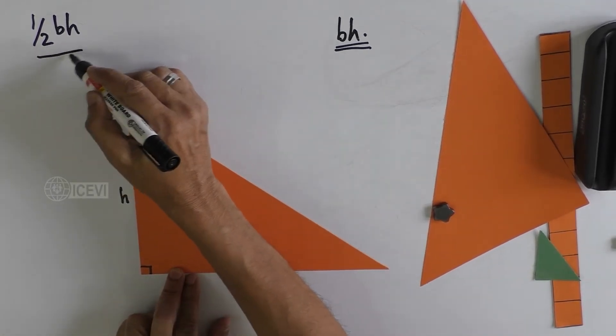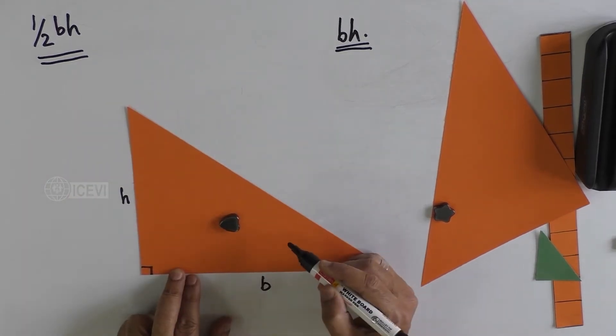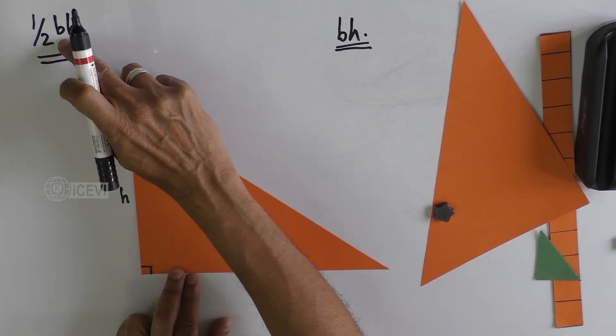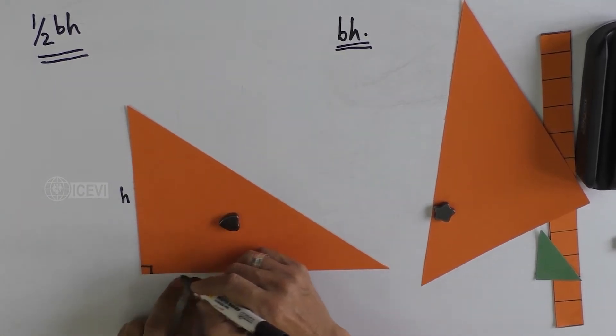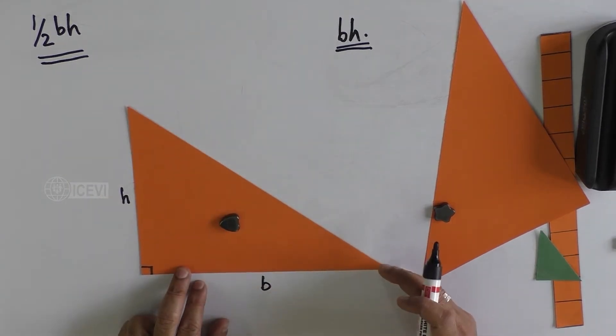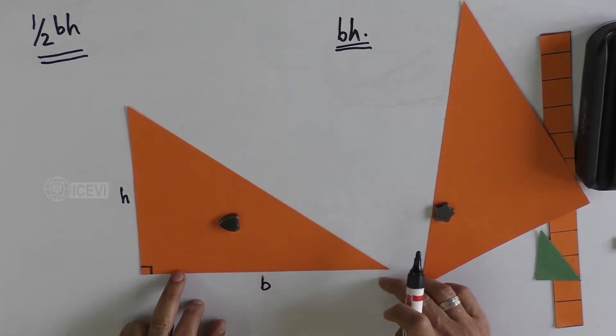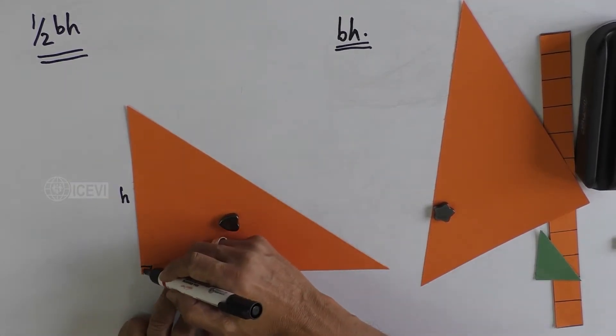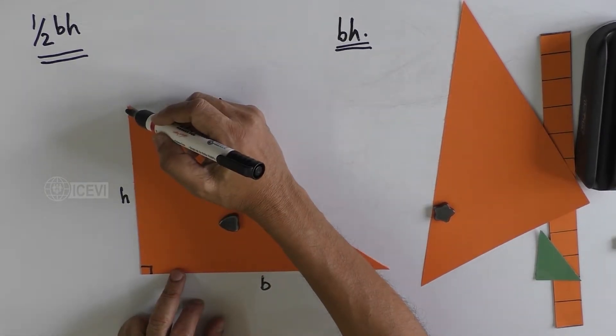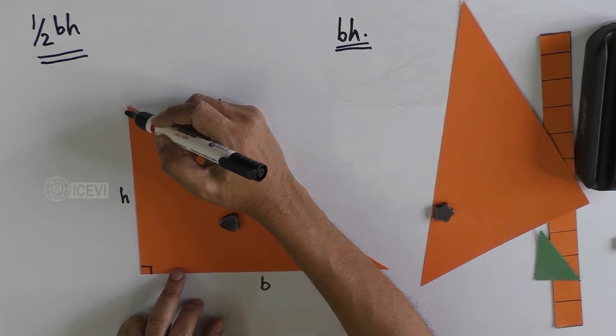Here, we do not call B as the side, we call B as the base for this triangle. You have a base, that is B. What is H? We call this as height.